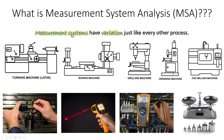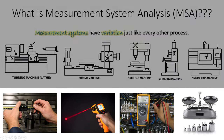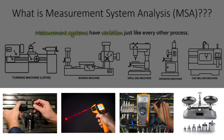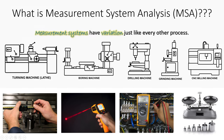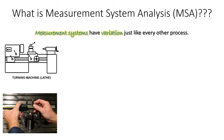Think about all the different ways you take measurements: electrical measurements, weigh scales, temperature, dimensional measurements like micrometers, calipers, hand tools, CMMs. There are all sorts of different ways we take measurements, and those measurement systems all have variation just like every other process. The point of a gauge R&R is to essentially measure, calculate, or quantify the variation that comes from our measurement system.